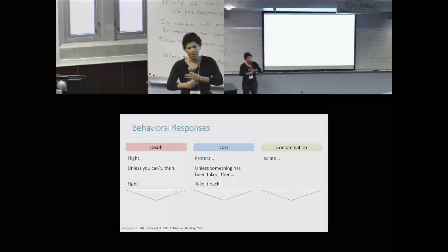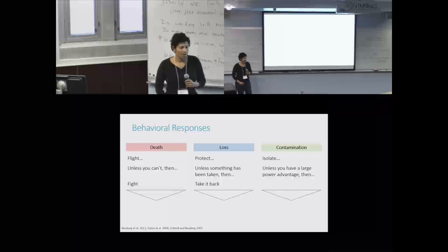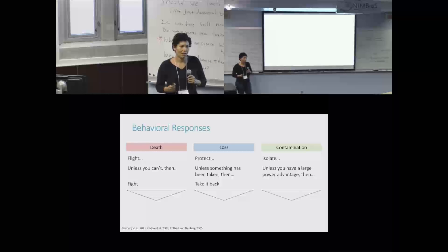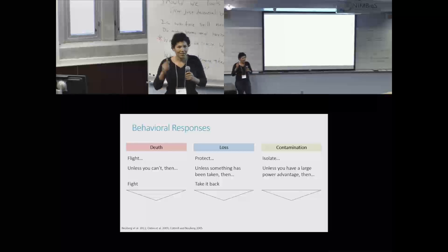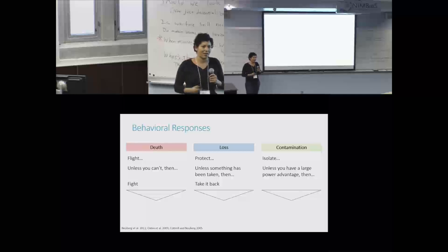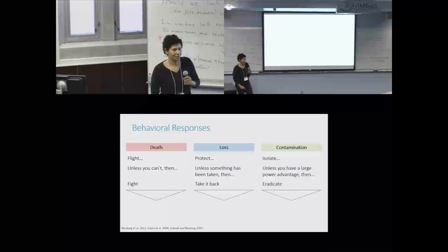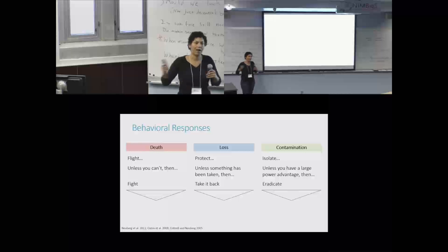With contamination, you isolate the healthy population. But with a contaminant, and there's some really cool thought experiments you can perform to test this, but basically the thing that eases the sense that a contaminant is truly gone is eradication. And you would eradicate something if you have a sufficient power imbalance.